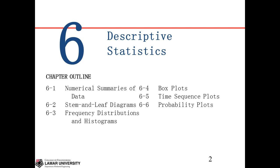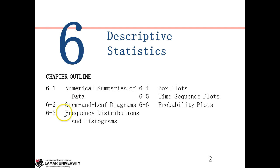This is chapter 6 in the textbook, where we will cover numeric summary and some graphic descriptions of the data. Within the graphic descriptions, including stem-and-leaf, frequency distribution, histogram, box plot, time sequence plot, and the probability plot. Today's topic is on the very first one — the numerical summary of the data.